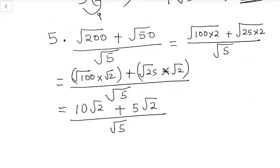If you notice, on both sides we have square root of 2. From our addition of surds, since they have the same irrational number, we can treat the root 2 as a variable and add 10 plus 5 together. That gives us 15 root 2 over square root of 5.